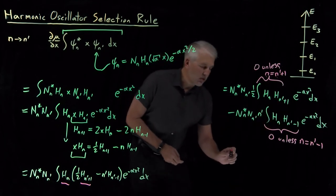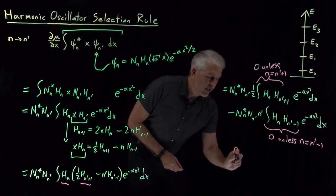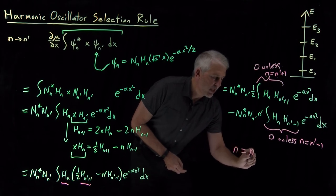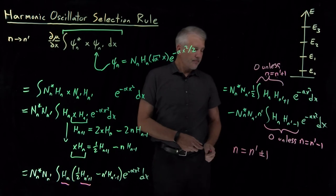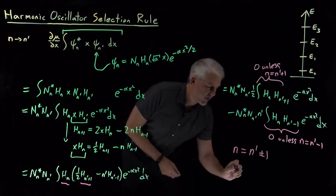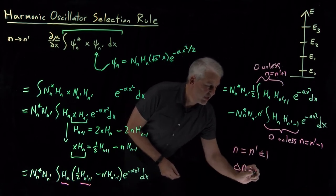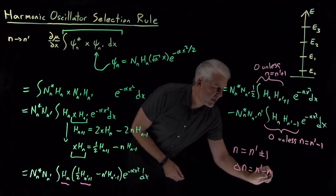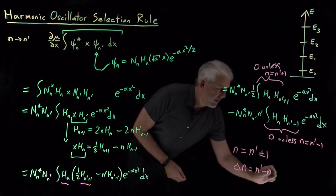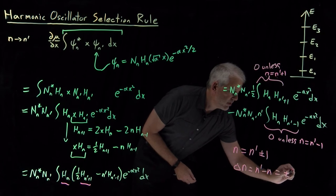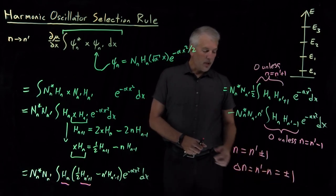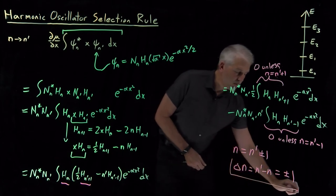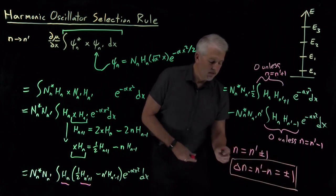My selection rule ends up being n must be equal to n prime plus or minus 1, either plus 1 or minus 1. Or if I want to write the change in energy level, n prime minus n, that has to be plus or minus 1. My energy level has to go up by 1 or has to go down by 1, and that's our selection rule for the harmonic oscillator.